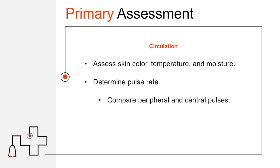Moving on to circulation — that's perfusion. Assess skin color, temperature, and moisture. A pale, cool, diaphoretic patient is hypoperfused and in some kind of shock. If they're hot and flushed, they could have an infection or be septic. Keep in mind that not all septic patients are hot — decompensated septic patients can actually be hypothermic. Determine pulse rate, rhythm, and quality, and compare peripheral pulses with central pulses to assess for decreased perfusion.